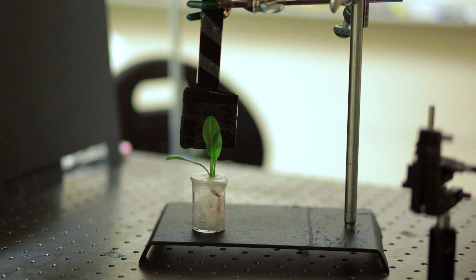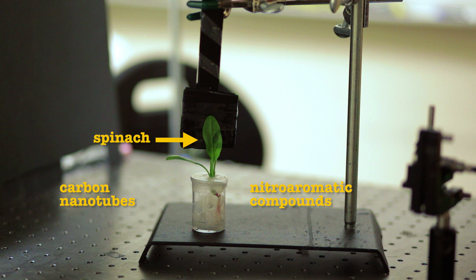To demonstrate this process, the team first embedded carbon nanotubes that can detect nitroaromatic compounds, which are often used in landmines and other explosives, into the leaves of spinach plants.